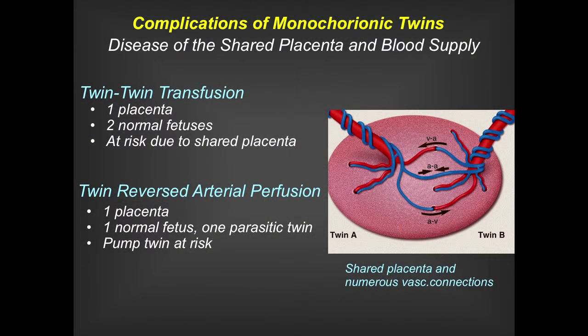About two-thirds or three-quarters of identical twins, or monozygotic twins, share a placenta. And when you share a placenta, you share vascularity, so the two twins have to share blood supply. Two problems develop as a result: one is twin-twin transfusion, where you have two normal fetuses and an uneven placental share; and the other is twin-reversed arterial perfusion, where you have one good twin and one that usually doesn't even have a head or cervical spine — more of a blob of tissue, called a parasitic twin.